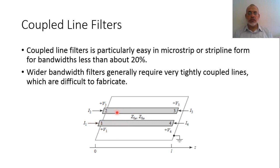The basic geometry of a Coupled Line Filter is two parallel lines over a ground plane. We actually have different configurations for such Coupled Line Filters, according to the even characteristic impedance, the odd characteristic impedance, and the length. Depending on the configuration of the coupled line circuit, we can obtain different filters.